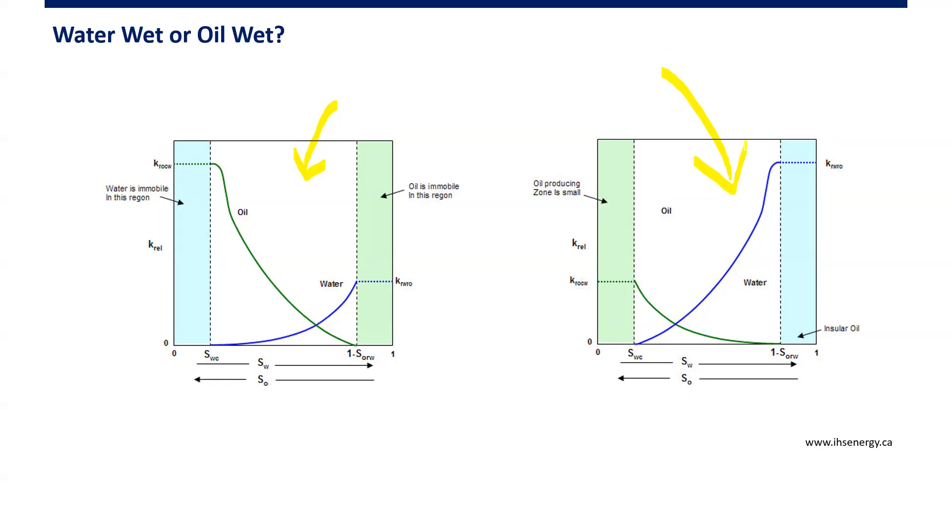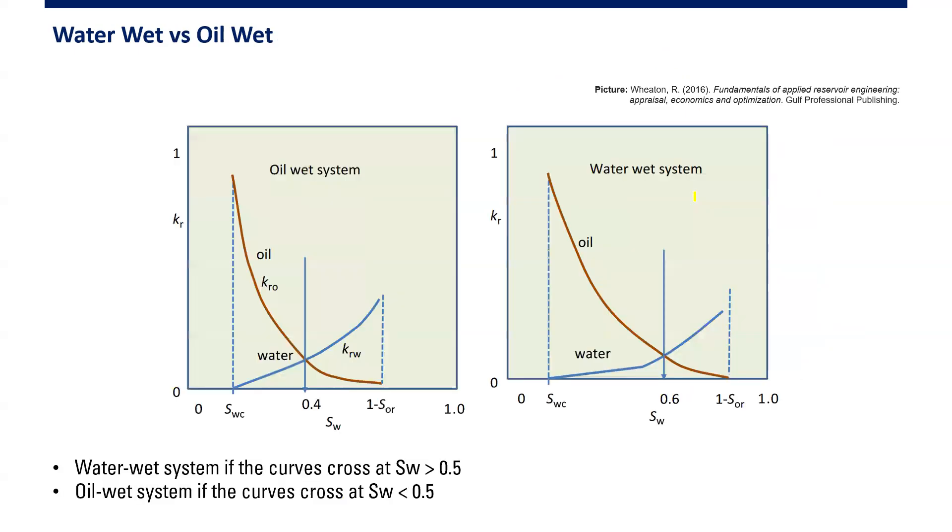Because this is a Quick Knowledge episode, let's answer it directly and quickly. For a water-wet system, we have this system if the curves cross at water saturation greater than 0.5. The crossing is between the oil relative permeability curve—this brown curve—with the water relative permeability curve—this blue curve.